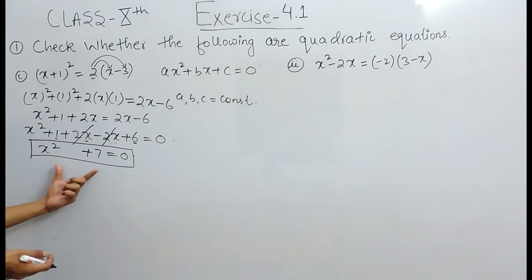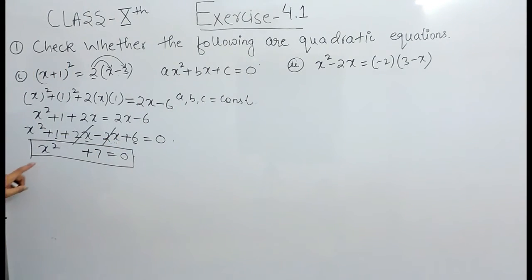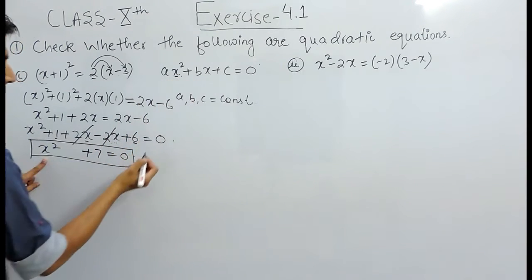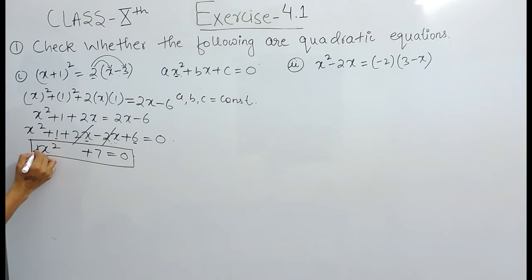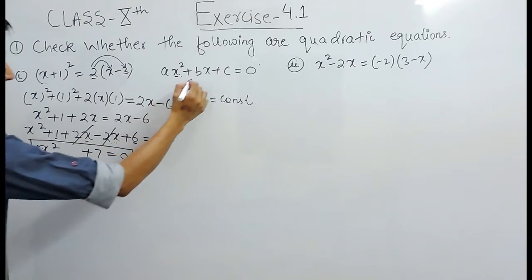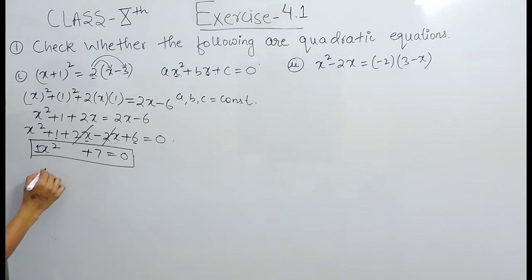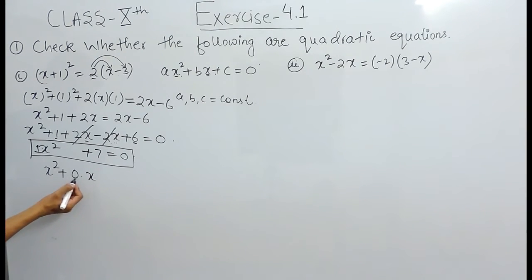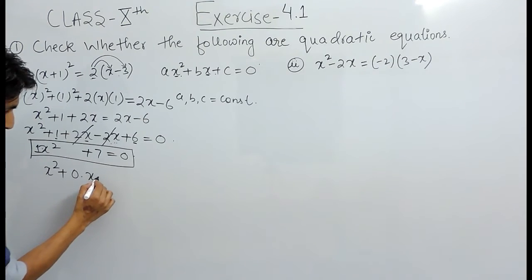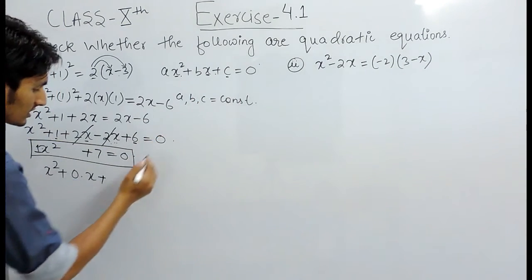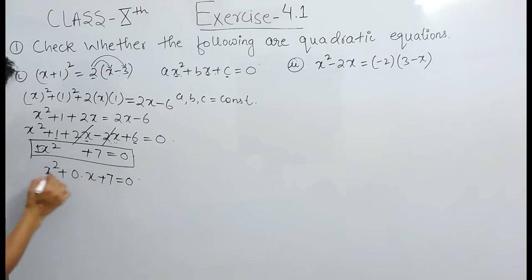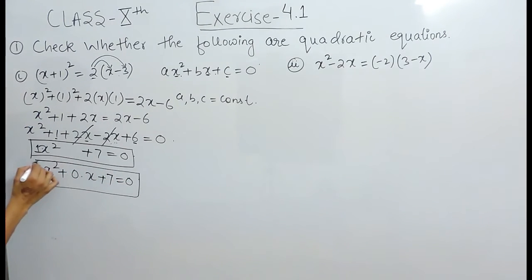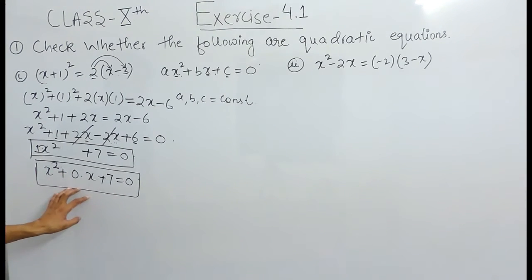Now we compare this equation with the standard form. We have x squared, where the coefficient a is 1. The x term is missing, so we can assume the coefficient of x is 0, so that 0 times x is 0. The constant c is 7 and equals 0. This matches the standard form of a quadratic equation, so this is a quadratic equation.